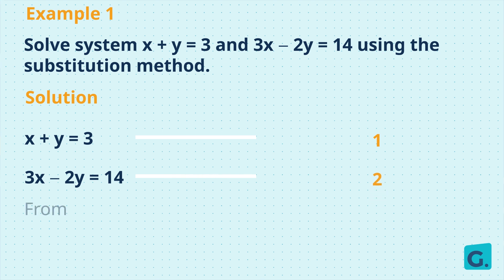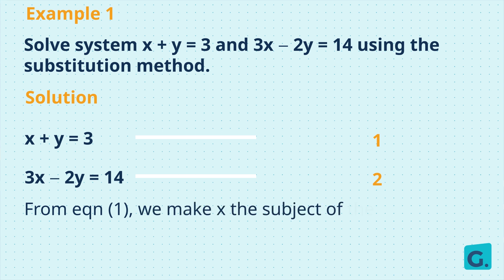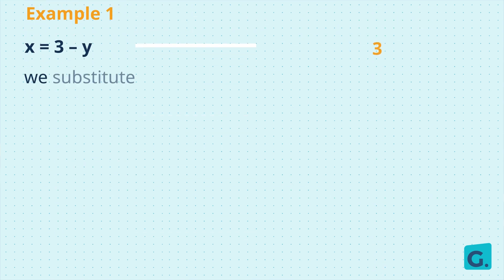From equation 1, we can make x the subject of the formula by moving every other term to the other side. So x equals 3 minus y, and we name this equation 3. Then we substitute equation 3 into equation 2. Wherever we have x, we will replace or substitute it with 3 minus y.